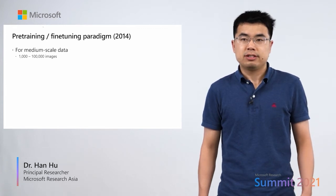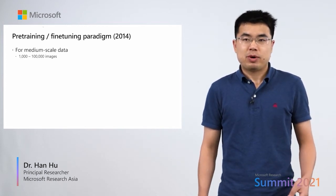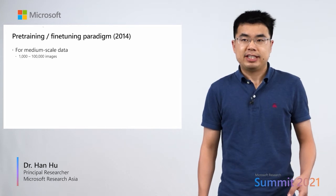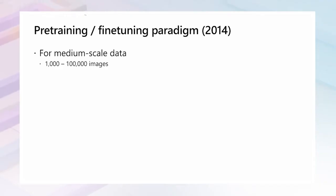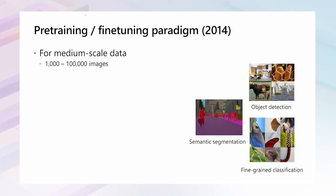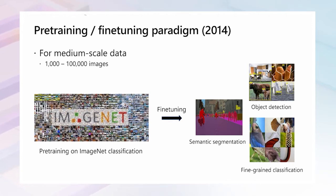The milestone moment is caused by a new paradigm named pre-training and fine-tuning. Unlike the ImageNet 1000 dataset which has more than 1 million images, many computer vision tasks don't have enough data to train a good deep model from scratch — for example, semantic segmentation, object detection, and fine-grained classification. We call them medium-scale problems. In 2014, researchers found that a pre-training and fine-tuning paradigm can well address this dilemma: deep networks are first pre-trained on the large ImageNet classification task, and then fine-tuned on the medium-scale problem. This paradigm significantly increased the prevalence of deep learning approaches.